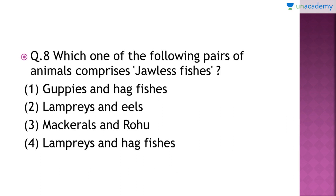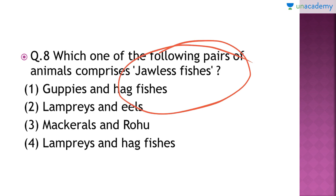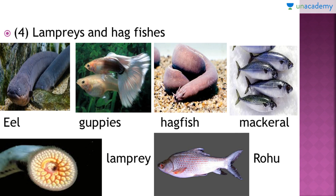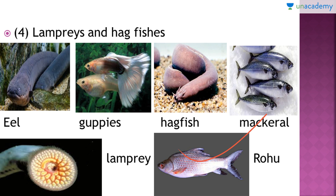Question number 8: which one of the following pairs of animals comprises jawless fishes? The correct answer is option number 4 — lampreys and hagfishes. Here are pictures of all the fishes given in the options. Hagfish and lamprey lack the jaw, whereas the rest — eel, guppies, mackerel, and rohu — have jaws. Hence the right answer is option number 4. Please do remember the pictures of these fishes too, as they can be asked again in exams.